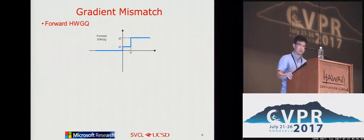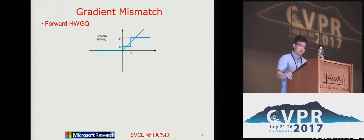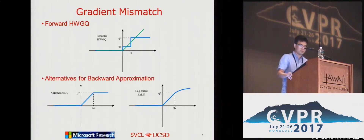Our third contribution is to deal with the gradient mismatch problem. HWGQ is a piecewise constant function — its gradients are zero almost everywhere. A naive solution is to use ReLU as the backward approximation, so that gradients can be back-propagated. However, there is a mismatch between these two functions, which could make the learning very unstable. We propose two backward approximation alternatives: ClipReLU and LogTailReLU. Both of them successfully suppress the mismatch on the tail of the forward and backward functions.